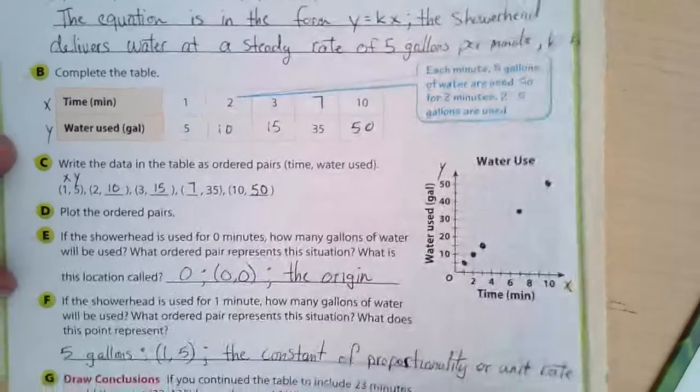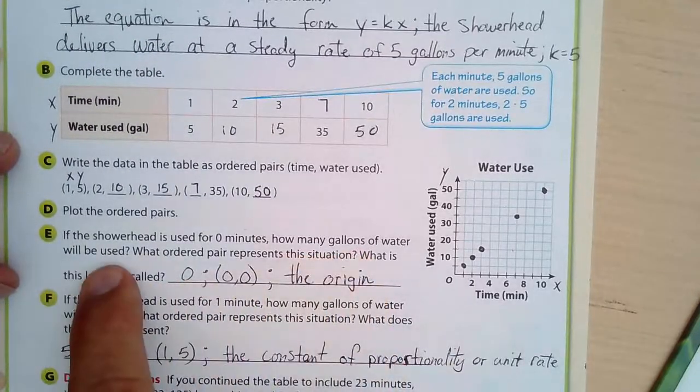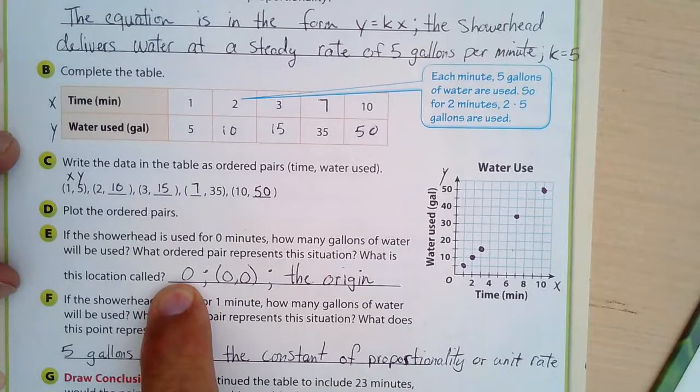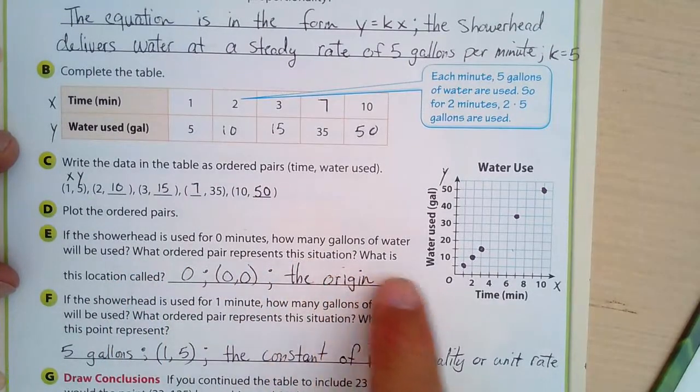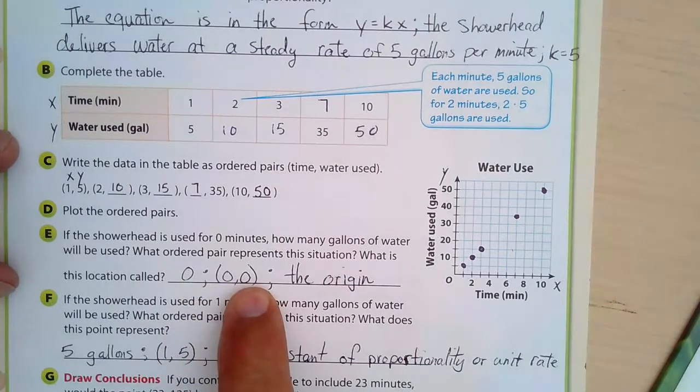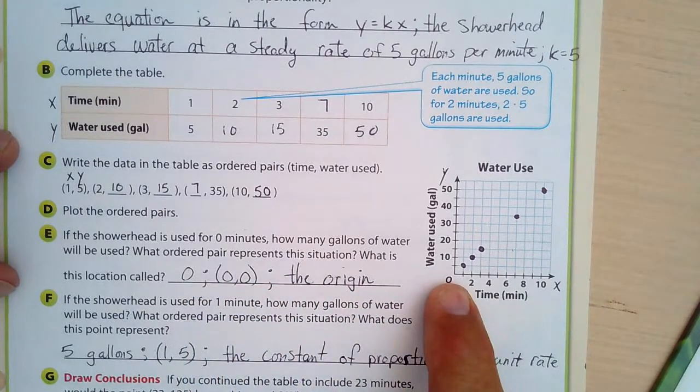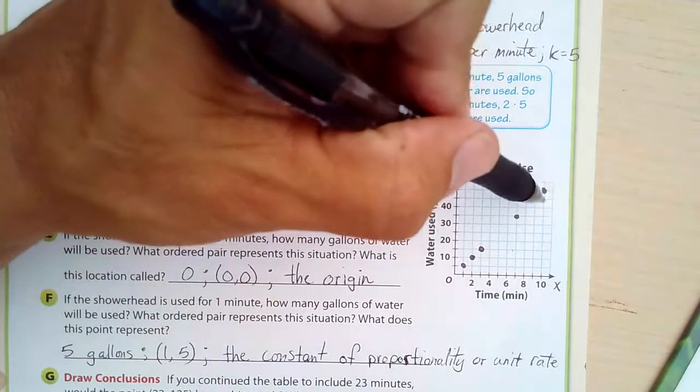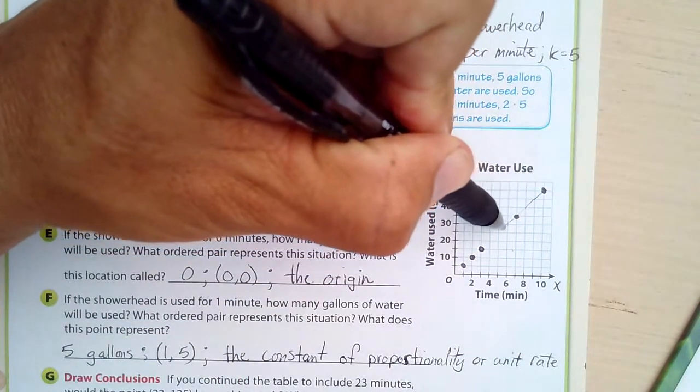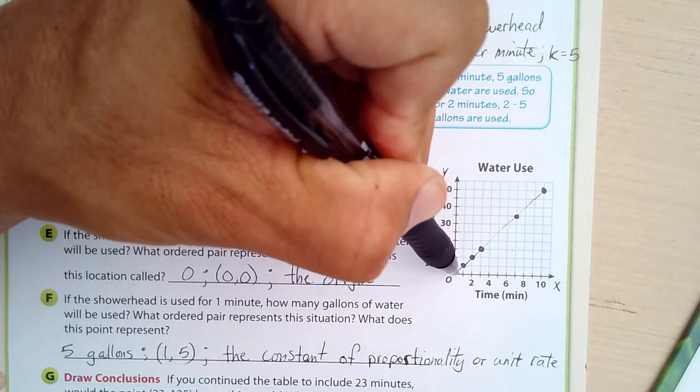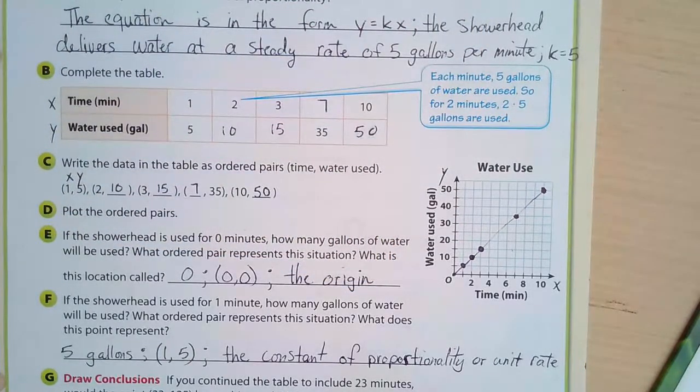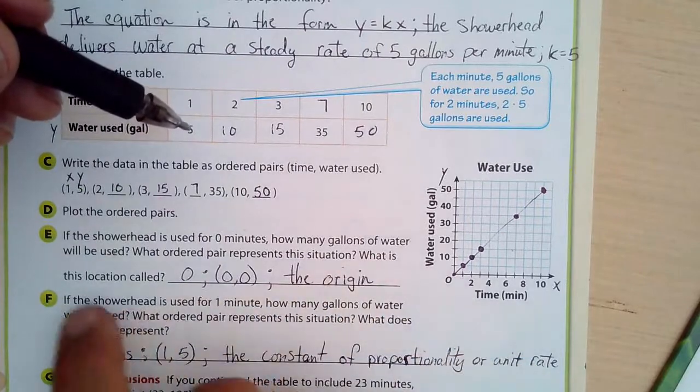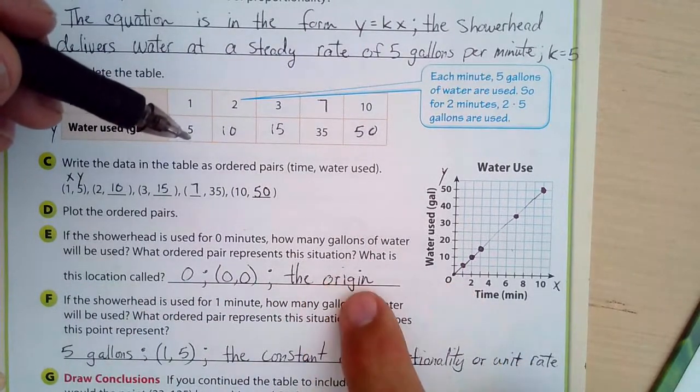If the shower head is used for zero minutes, how many gallons of water will be used? Well, that's zero. What ordered pair represents this situation? That would be zero, zero. And even though we don't have a dot there, we can draw this line connecting these points. That would put us at a new point at zero, zero right there. What is the location called? It's called the origin, zero, zero.